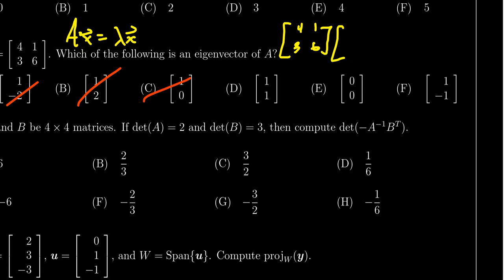Let's try D with one and one. We're going to get four plus one and three plus six, which gives us five and nine. That's not a scalar multiple of one, one, so we'll remove that from consideration.